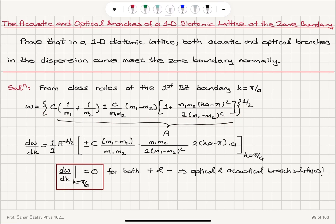If we take our result for the ω versus k relationship for a 1D diatomic lattice and take the derivative with respect to k, we see that we have a (ka - π) term. For k = π/a, this gives us 0, and therefore dω/dk is 0 at the first Brillouin zone boundary for both optical and acoustical branches.